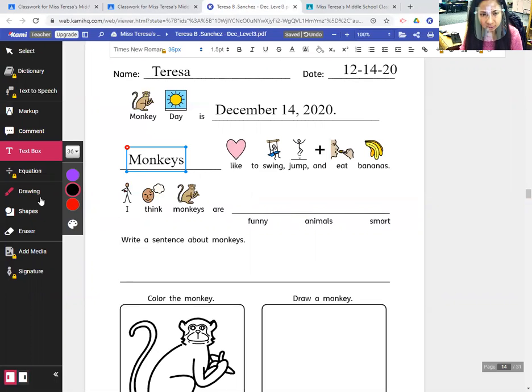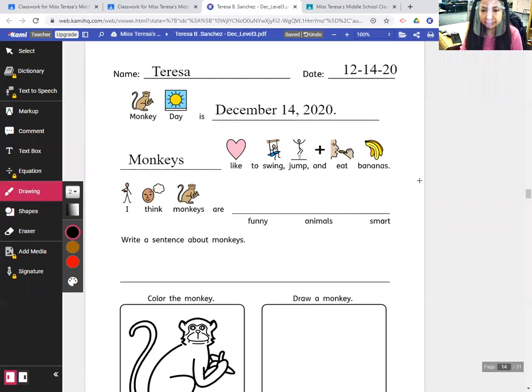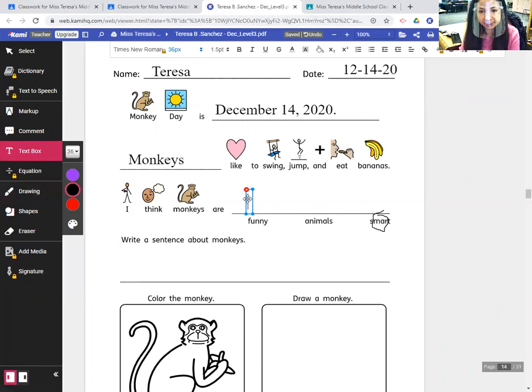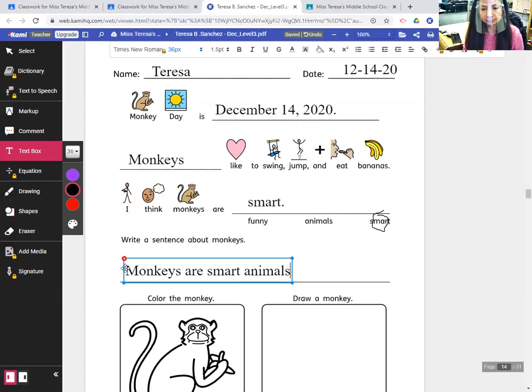And I think monkeys are funny. Animals are smart. I think monkeys are smart too, so maybe I'll circle smart. I'll write a sentence about monkeys: Monkeys are smart animals. Monkeys are smart.